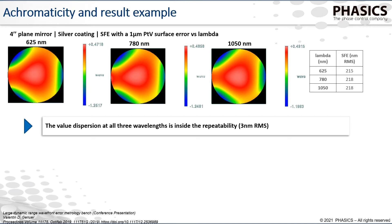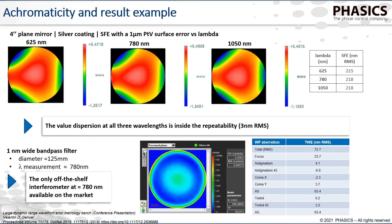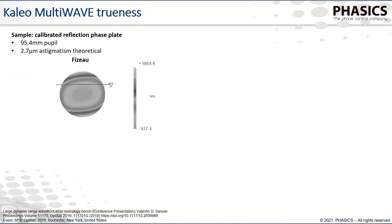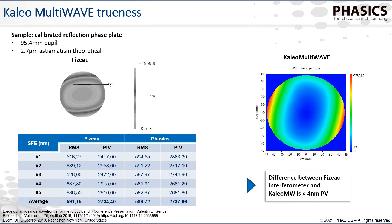Another application specific to Kaleo MultiWave is working at wavelengths that correspond to your optics — for example, using a specific filter at a specific wavelength. As a standard off-the-shelf solution, Kaleo MultiWave is available at 780 nanometers, or it could be 800 or 900 nanometers depending on the optics you want to characterize. We also made a direct comparison with a Fizeau interferometer on a reference system with approximately 2.7 microns of astigmatism. Five measurements were made with each instrument and the results show less dispersion in measurement-to-measurement difference, with an average difference of less than 4 nanometer PV.